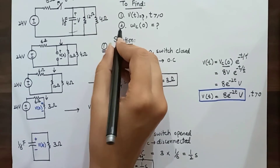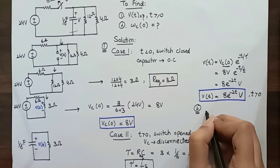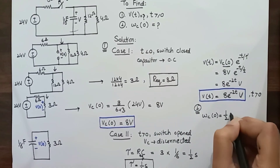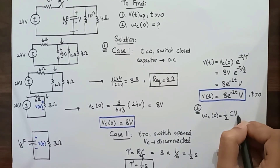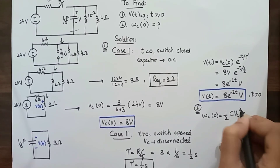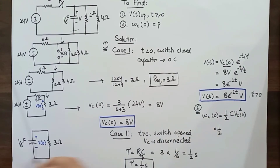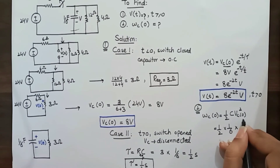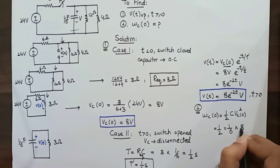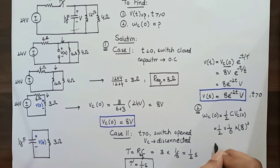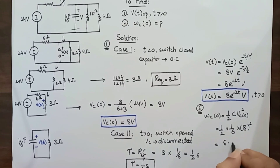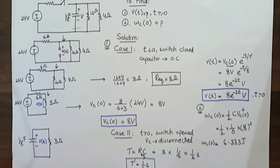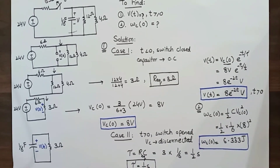For Part 2, we find the initial energy stored in the capacitor. Using the formula W = (1/2) × C × v²(0), with C = 1/6 F and vc(0) = 8 volts: W = (1/2) × (1/6) × 64 = 5.333 joules. That is the energy stored in the capacitor when t is less than zero.